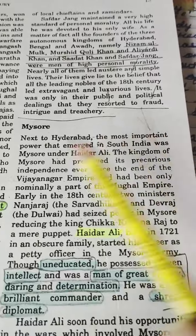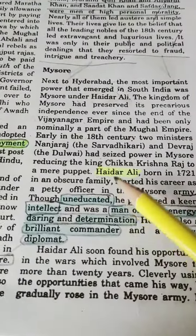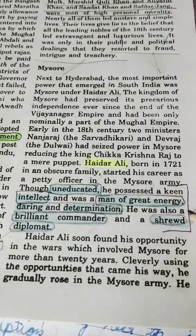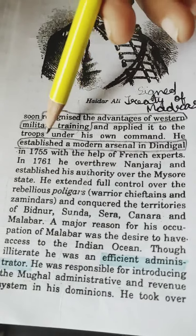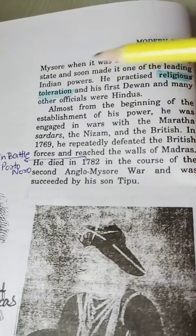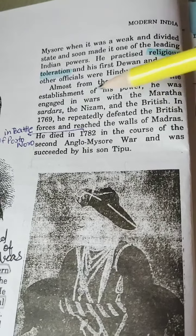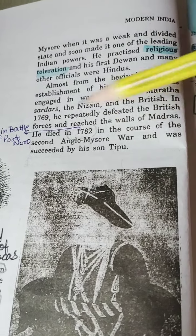Next to Hyderabad, the most important power in South India was Mysore under Haider Ali. He was uneducated but had a keen intellect, great energy, daring, determination, and was a brilliant commander and shrewd diplomat. He recognized the advantages of Western military training, established a modern arsenal in Dindigal, was an efficient administrator, and practiced religious toleration. He repeatedly defeated British forces and reached the walls of Madras. He died in 1782 during the Battle of Porto Novo in the course of the Second Anglo-Mysore War and was succeeded by his son Tipu.